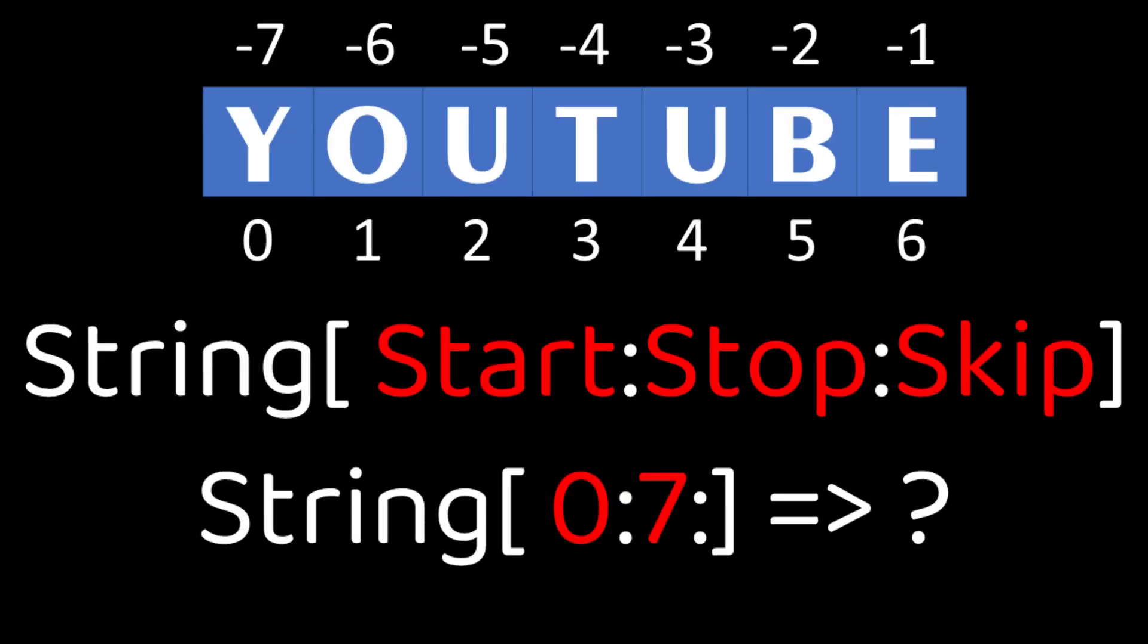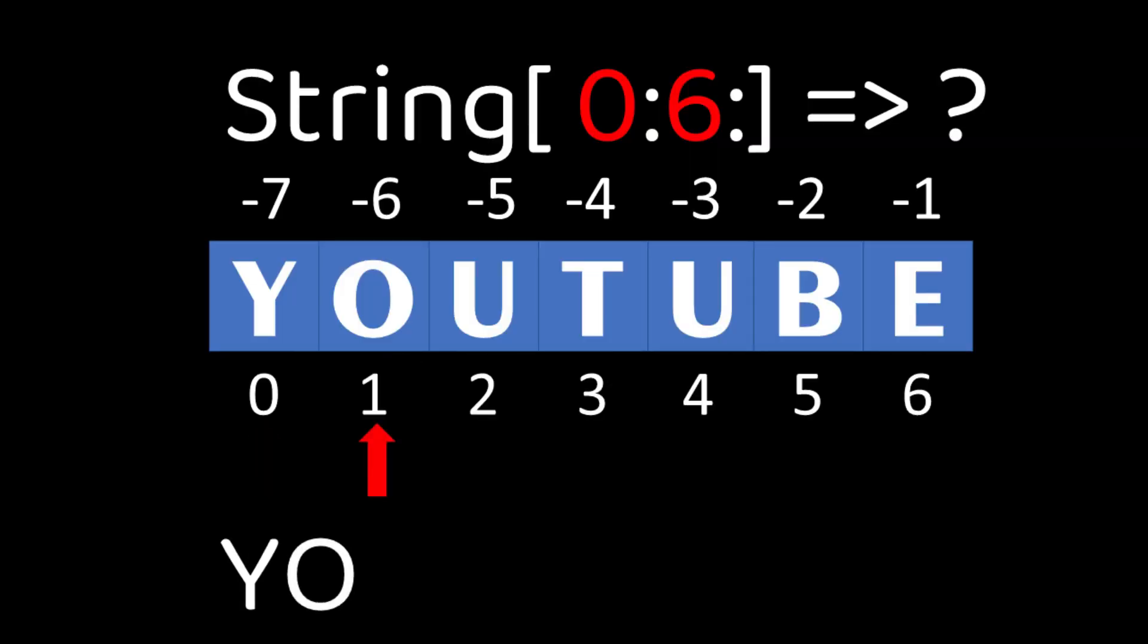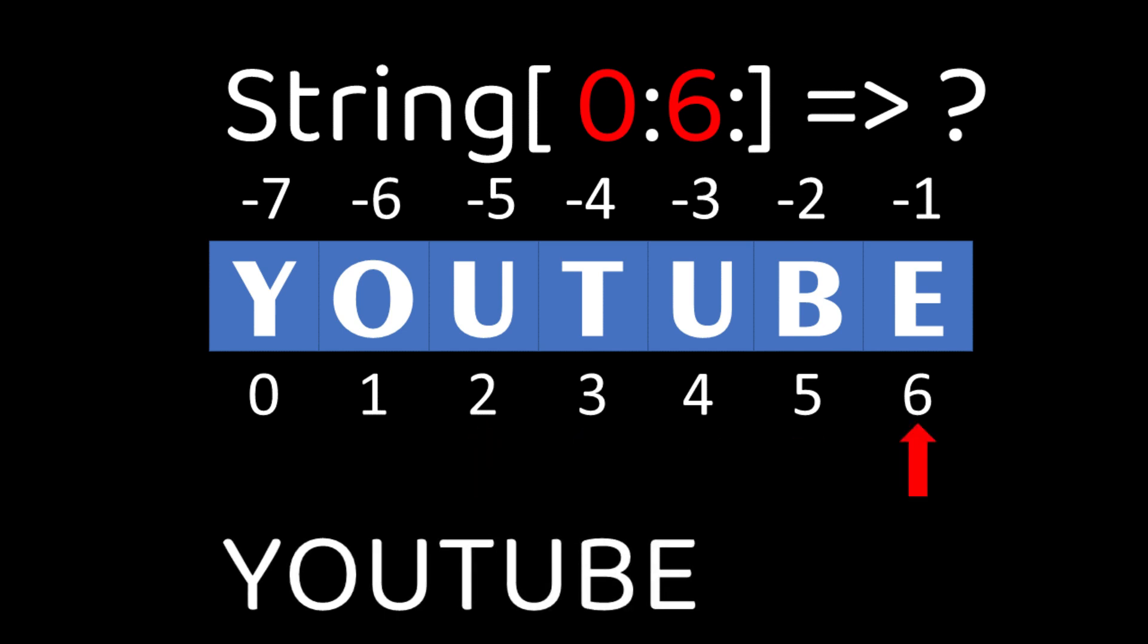Example 1. Here the given string is YouTube and its indexing is shown. Now we want the output of the following string. Here, 7 is the range and it returns n minus 1. Hence, string index for 0 to 6 will be considered with default skip value 1. This is the output of the following string.